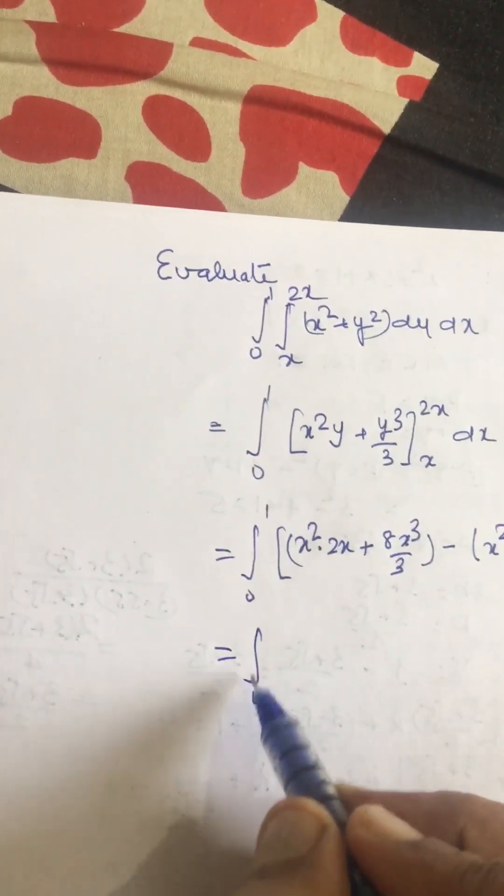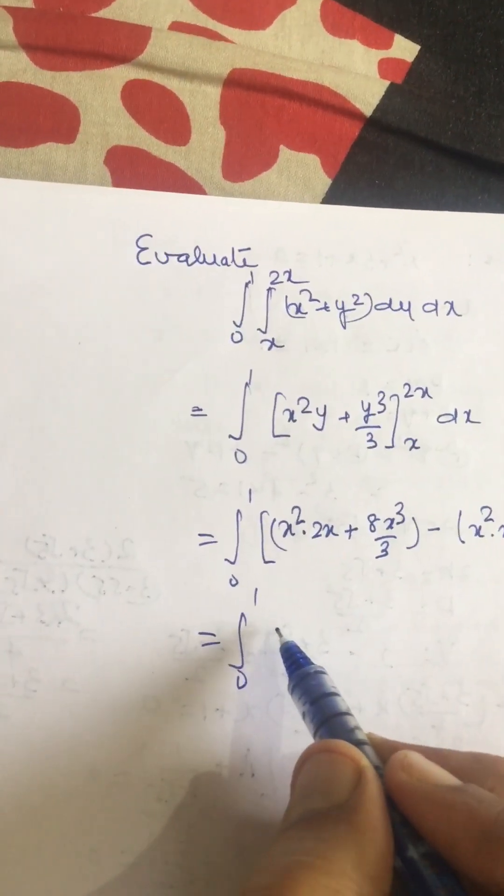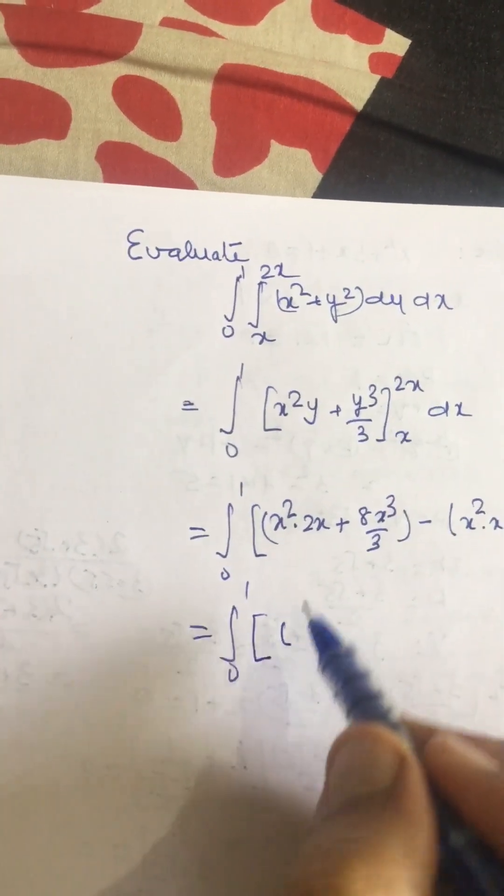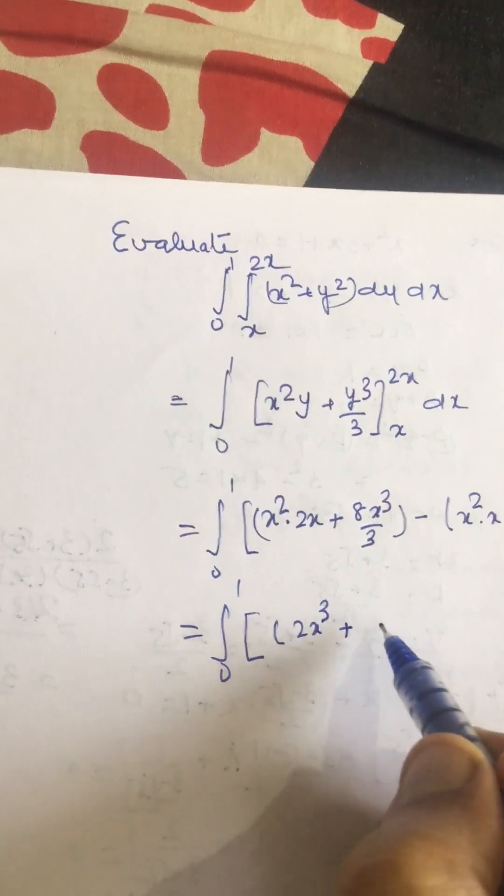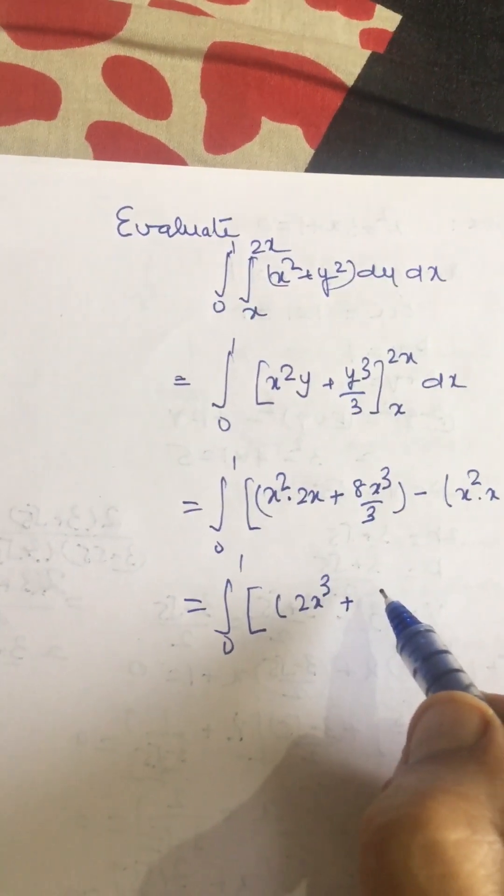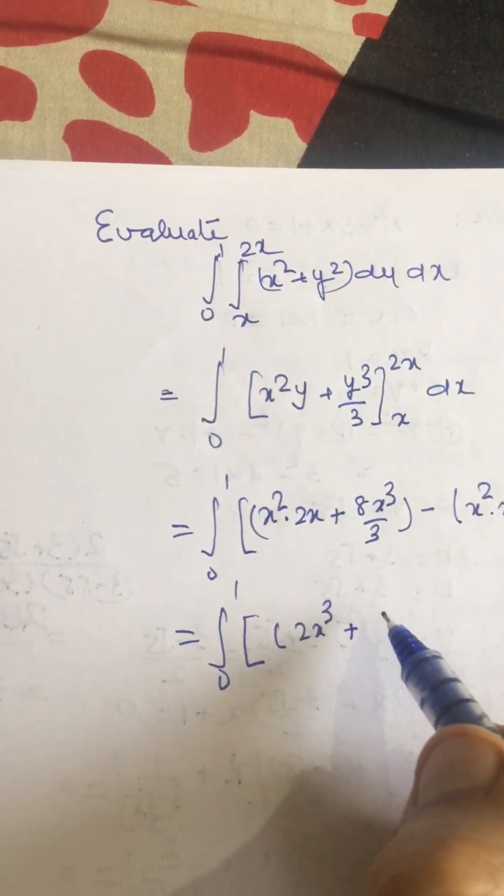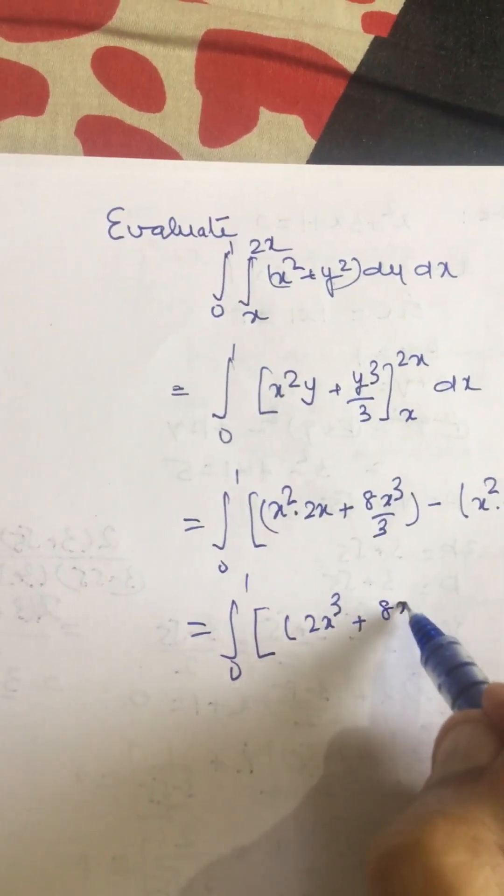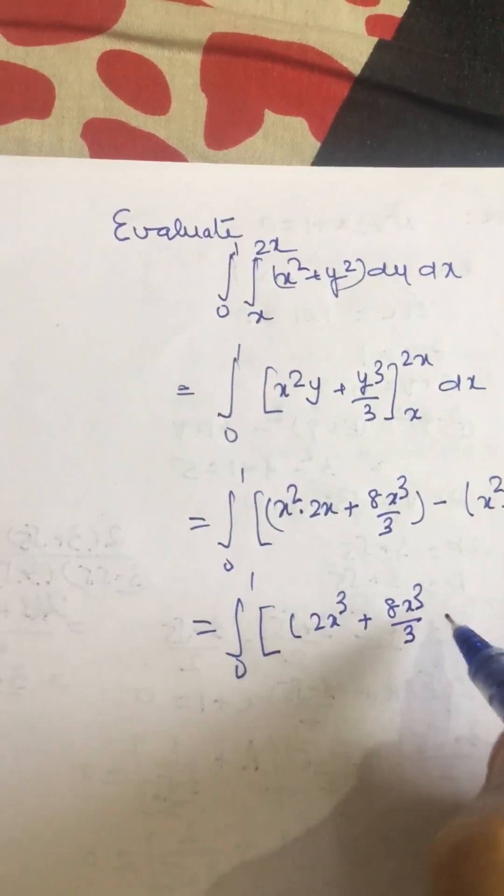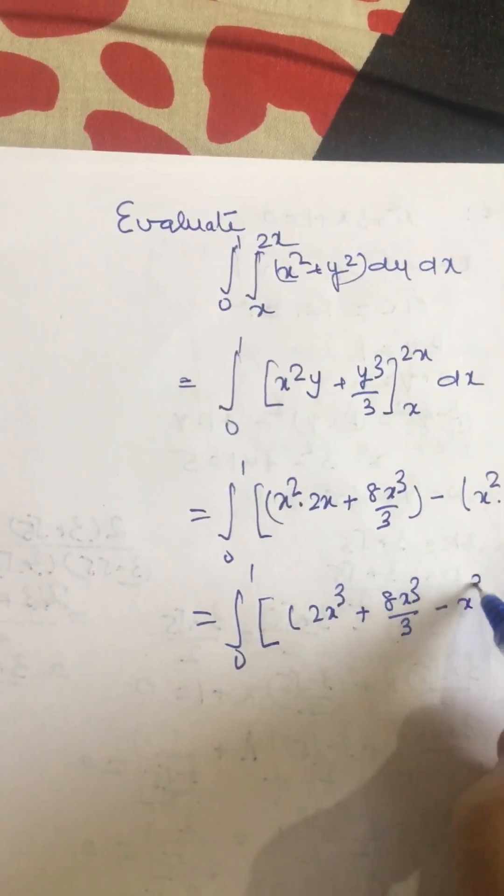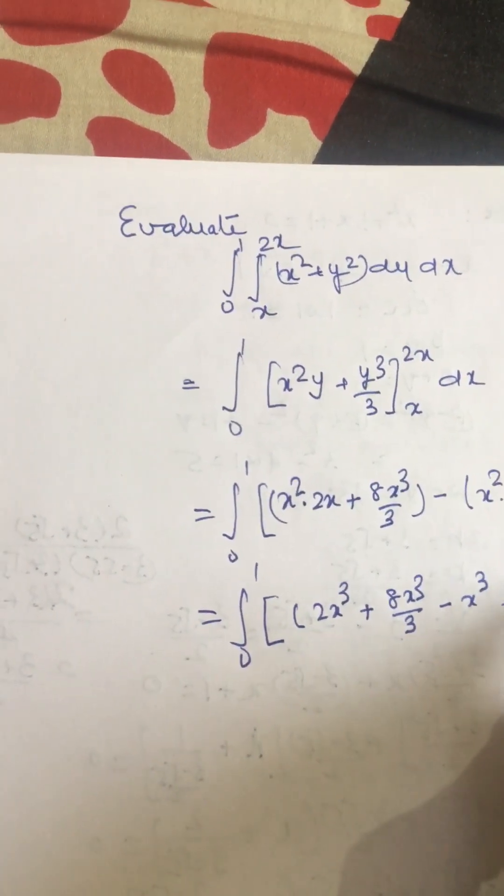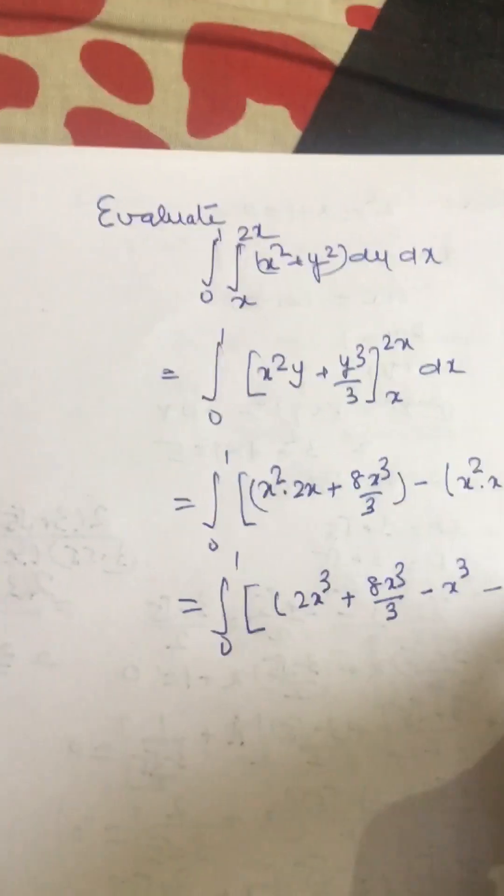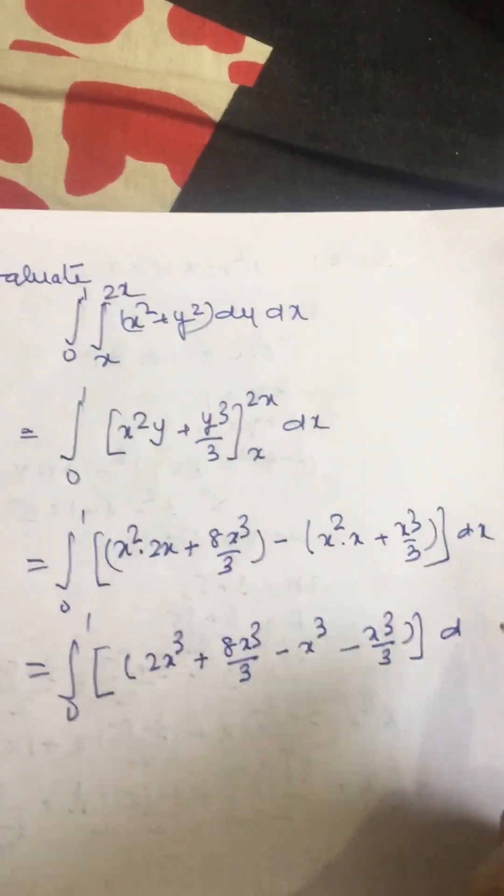This we can write 0 to 1, 2x cube, plus 8x cube by 3, minus x cube, and minus x cube by 3, and this will be integrated with respect to dx.